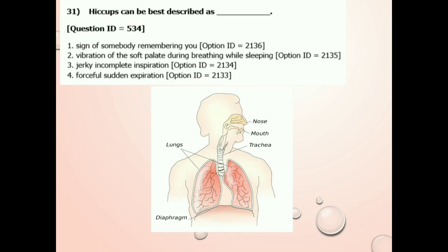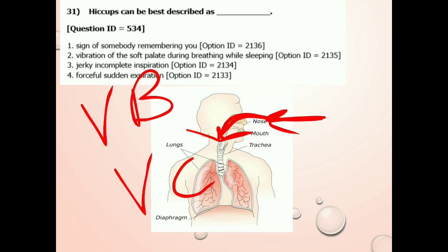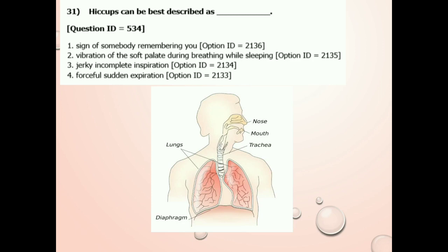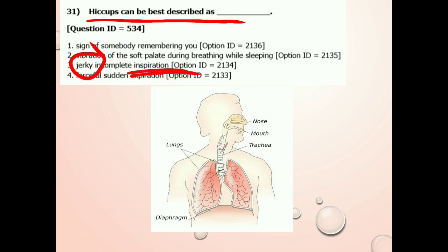Now, when this diaphragm suddenly contracts during exhalation, the air rushes up to the throat and hits the voice box, and the vocal cords are suddenly closed. This whole process generates a sound which we call 'hitchki' or in English, hiccups. So the answer for question 31 is option number 3: jolt or incomplete inspiration.